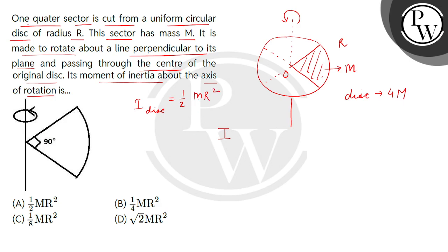Now this entire disc has mass 4M in place of M, and radius is the same, that is R. So the moment of inertia of sector will be found as half multiplied by the mass of the sector, that is M, multiplied by radius square.